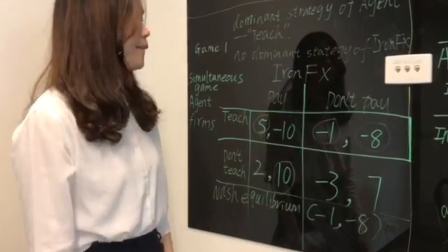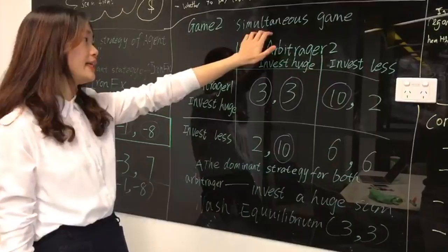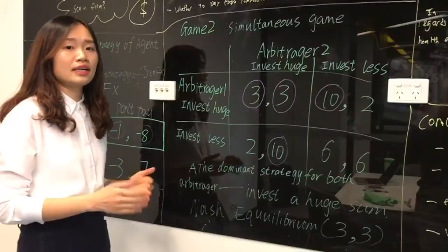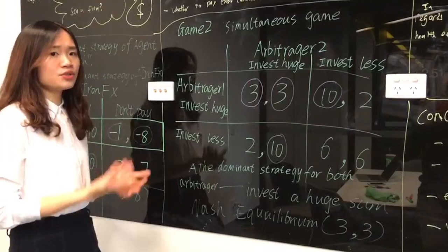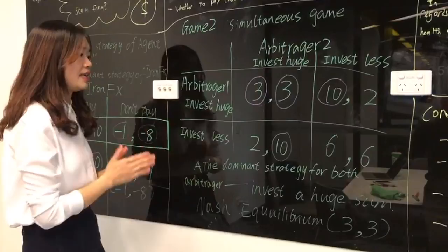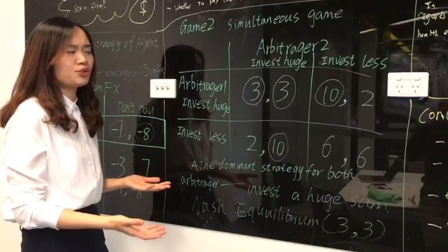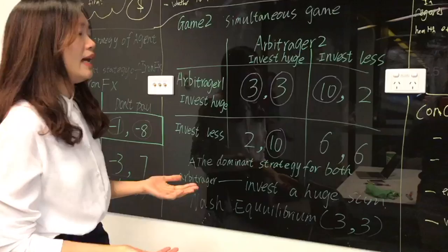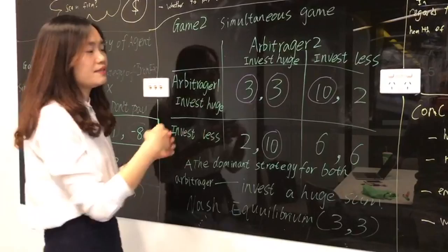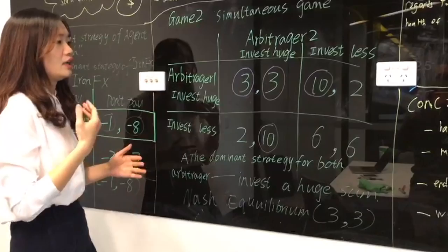Game 2 also is a simultaneous game. In this game, there are two arbitragers who want to get the extra profit from the funding pool. There is an interest conflict between those two arbitragers. If they both invest too huge, it will erode this profit because it will attract other arbitrage into the market. And if one invest huge sum, one invest less, who invests a lot will get the higher profit and the other will get the lowest profit.